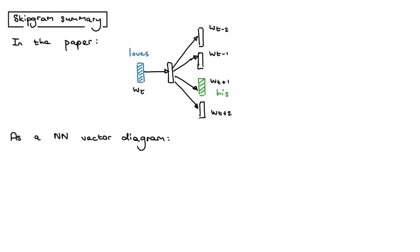I want to give a broad summary of the Skipgram Word2Vec model and also highlight some things that bothered me in the paper.